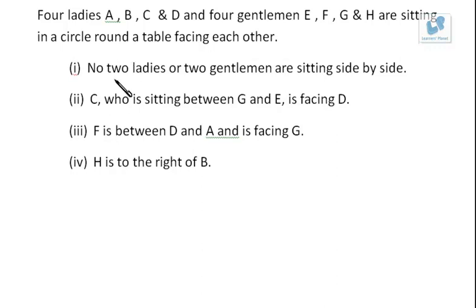Now the instructions are: there are four ladies and four gentlemen, that means in all there are eight people. No two ladies or two gentlemen are sitting side by side. C who is sitting between G and E is facing D. In the first instance, no need to read all the information - you start making the diagram.